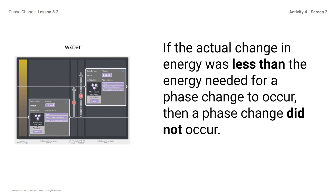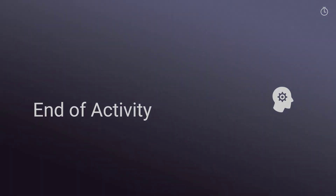If the actual change in energy was less than the energy needed for a phase change to occur, then a phase change did not occur. We can see this in the water example: the arrow labeled with a red A hexagon is the actual energy change, and it is shorter than the energy needed for a phase change arrow, which is solid and labeled with a red Z. This indicates that a phase change did not occur. End of activity.